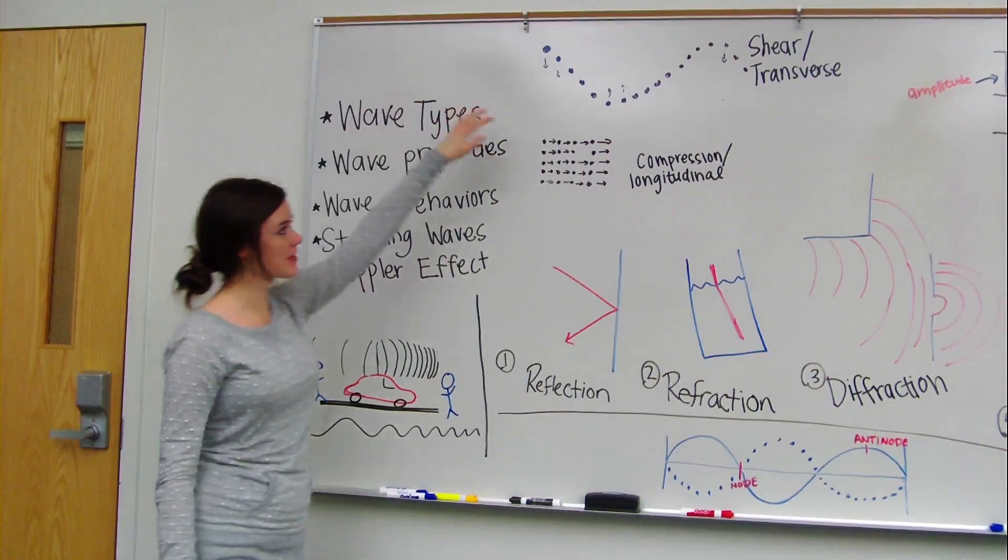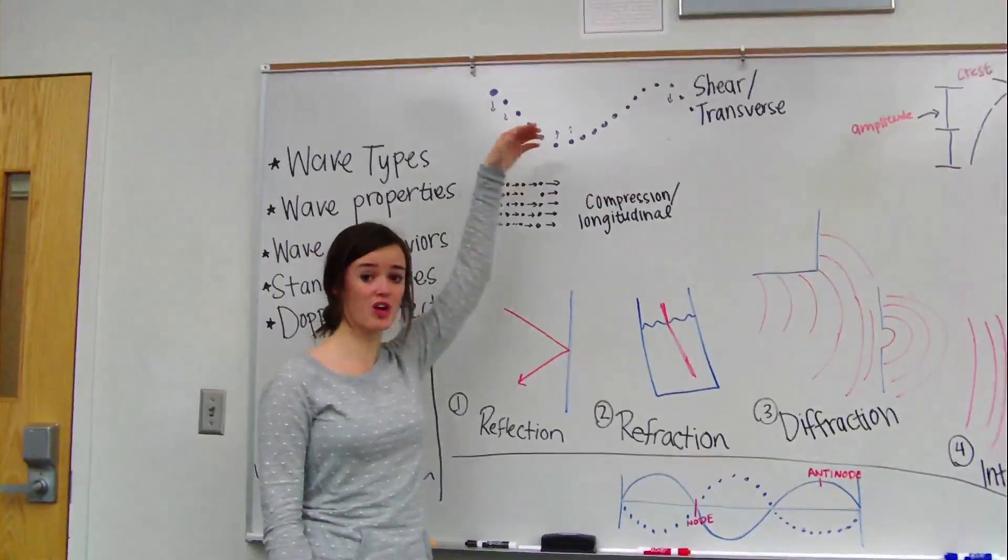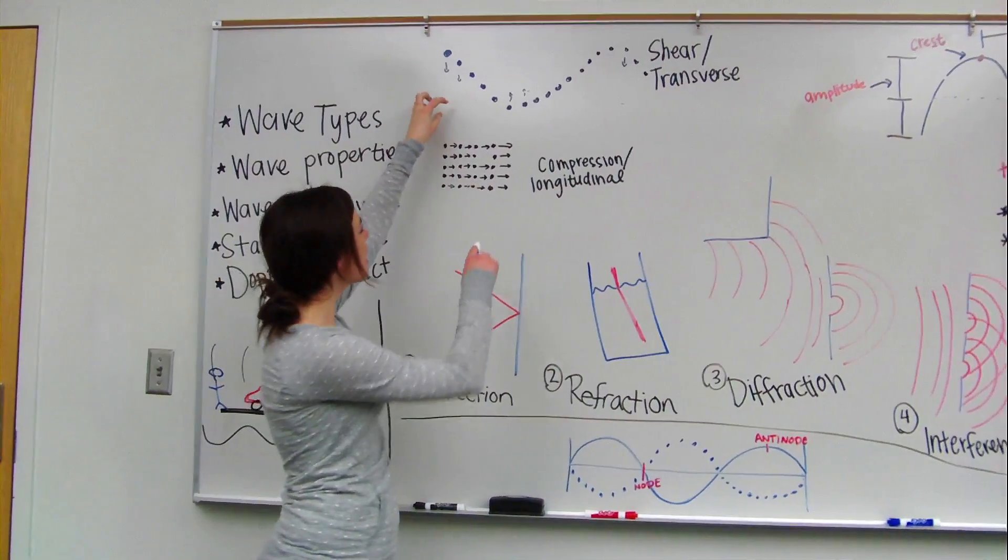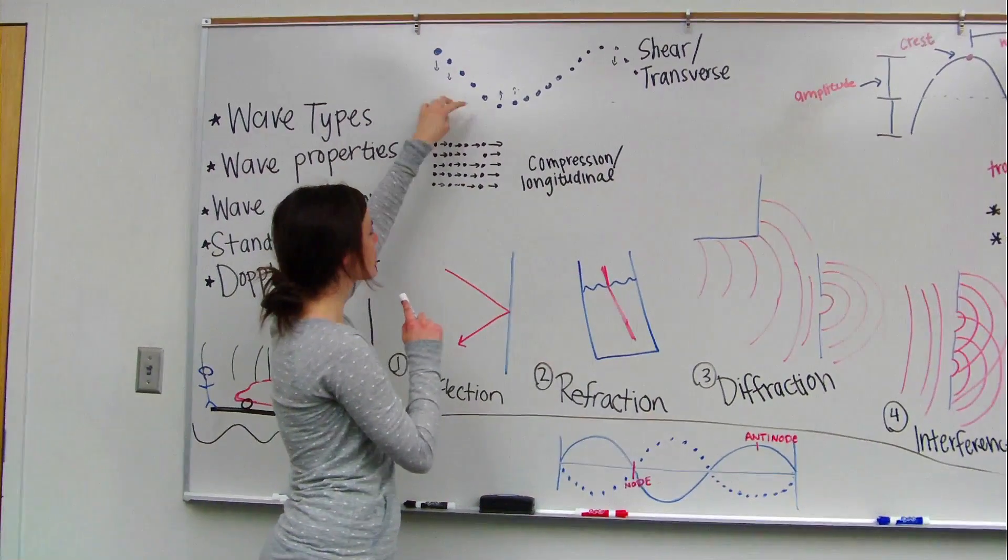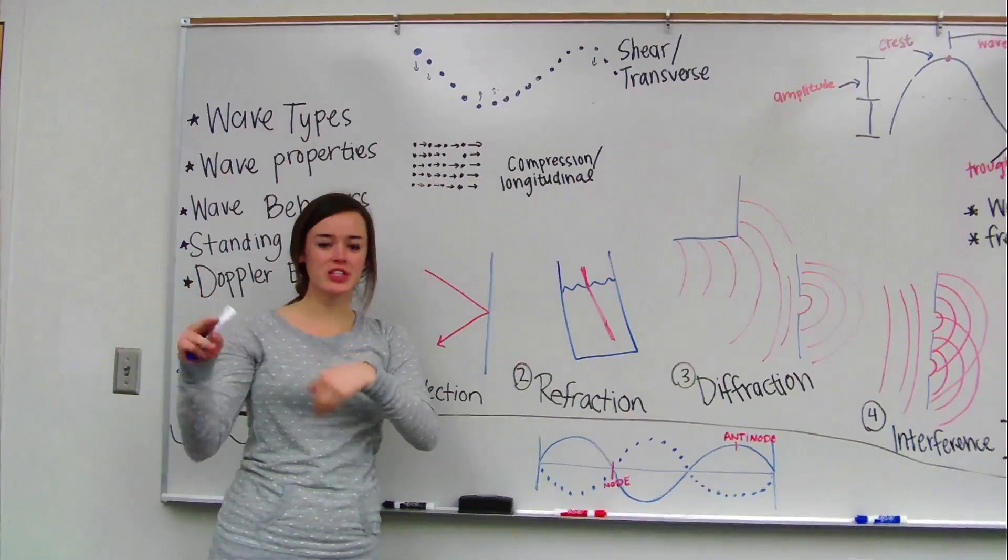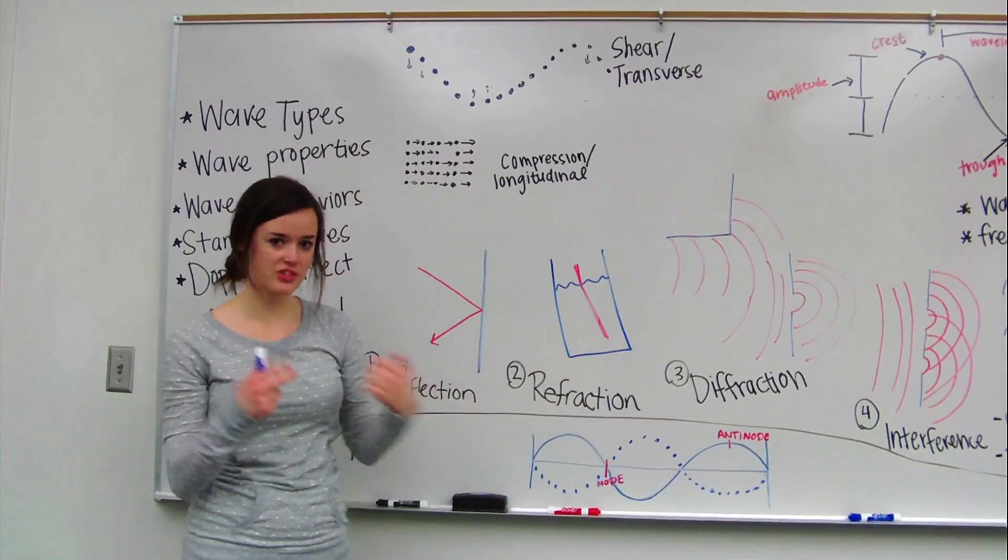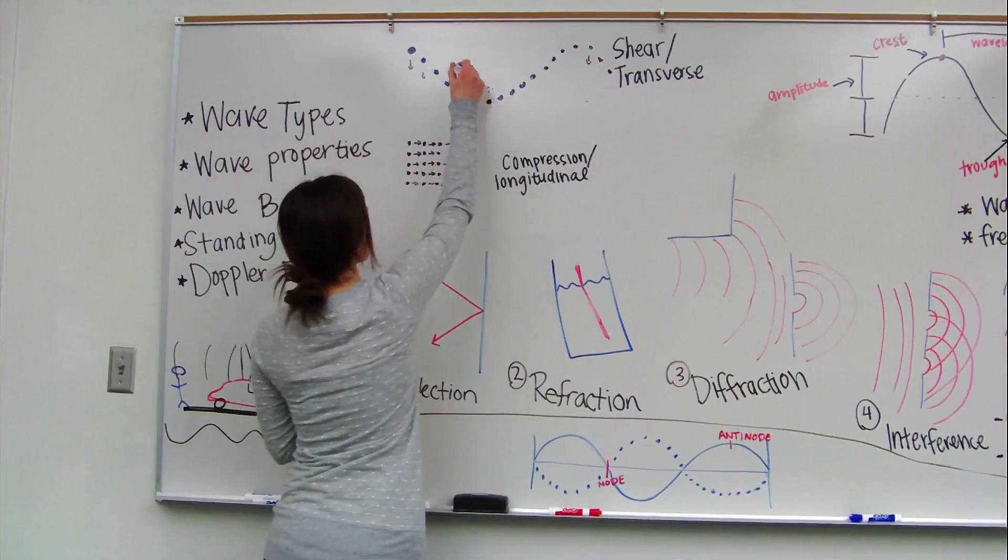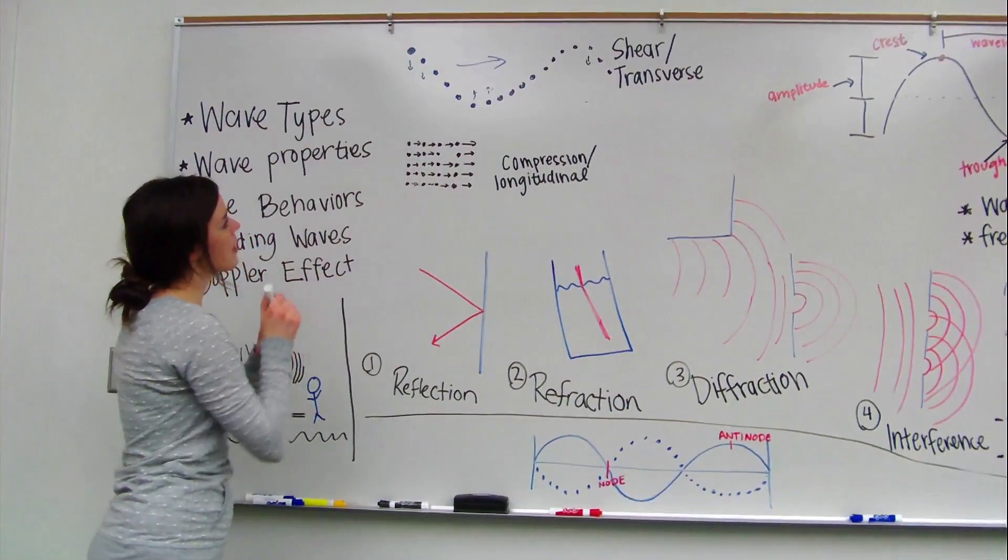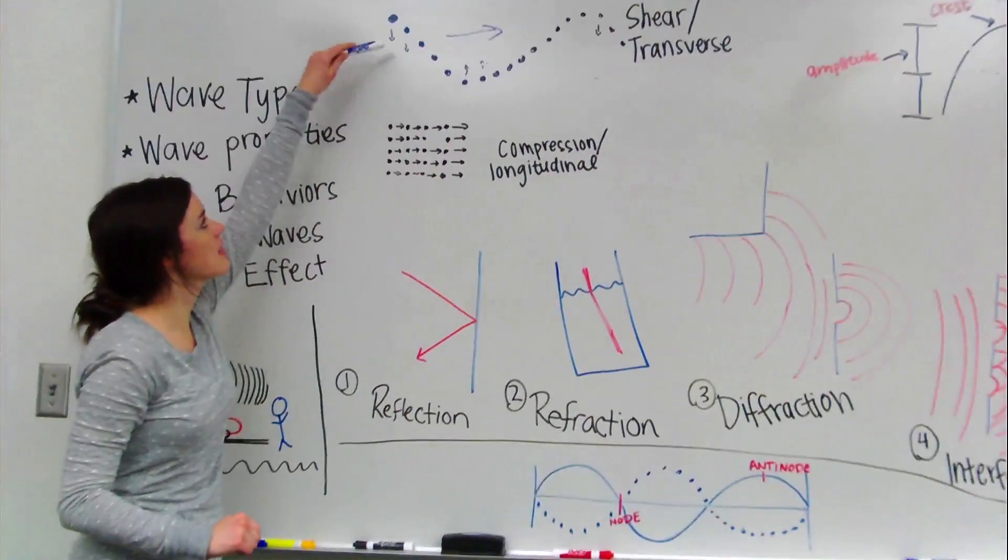So up here we have shear waves, which are also called transverse waves. Now these waves, the particles in them move perpendicular to the direction that the wave propagates. So let me explain that. This wave is traveling to the right, but if we look at the individual particles, they're moving downwards,